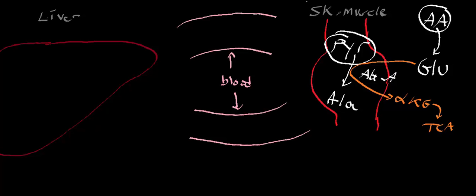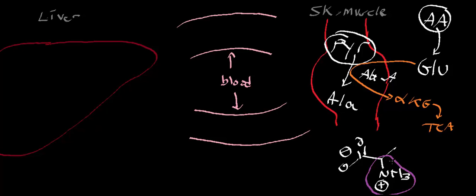Alanine is a very important transporter of amines in the blood. Looking at the structure of alanine, notice the amine group on the alpha carbon — that alpha amine came from the alpha position on glutamate. One function of alanine in the blood is to transport amine groups. Ammonia is toxic, especially in large amounts, so we attach it to alanine — catalyzed by alanine aminotransferase — taking the alpha amine from glutamate and transporting it on pyruvate in the form of alanine.